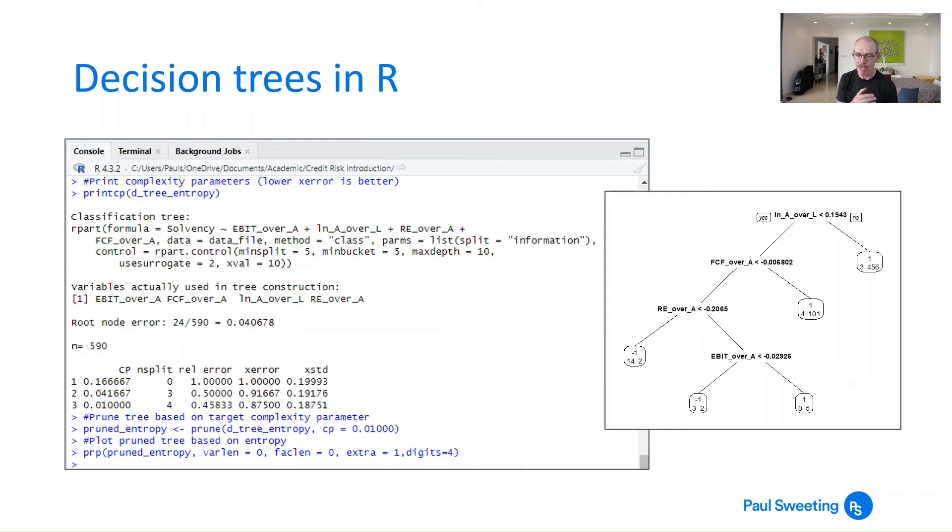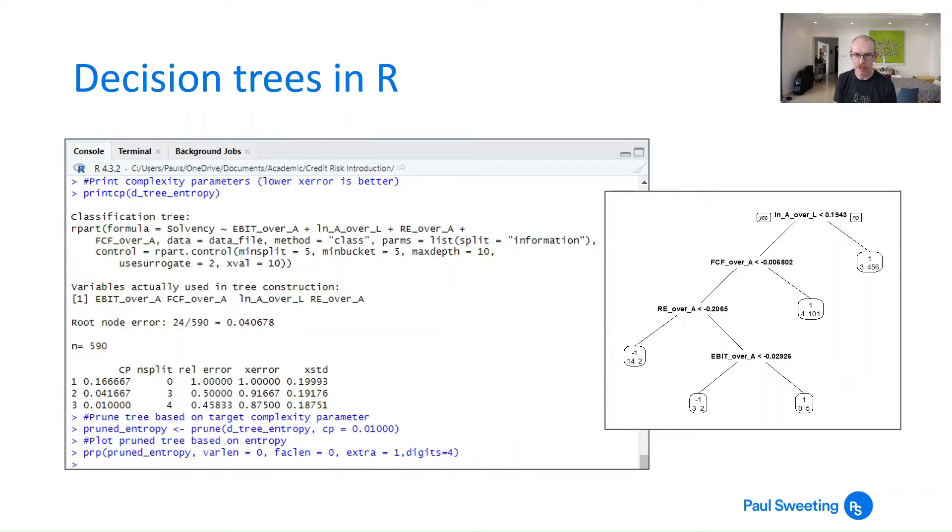So this is what happens if we use Gini impurity instead. We get something different in terms of order but also in terms of pruning. And again the change in seed will change these results because cross-validation is random. So you'll see here the main change we have is split equals Gini. So that shows that we're using Gini impurity. And the pruned number that we end up with is in this example 0.041667.